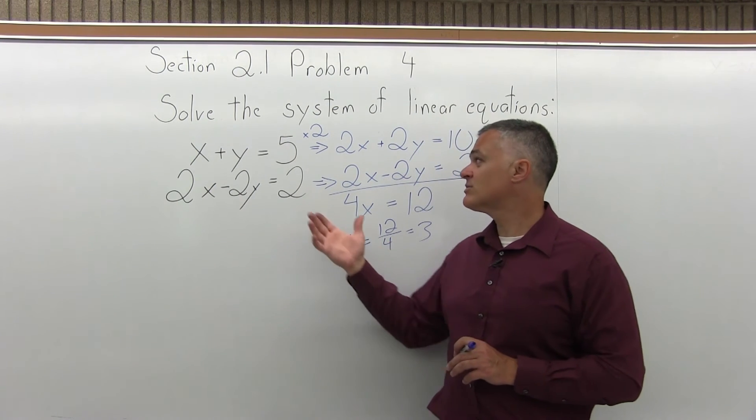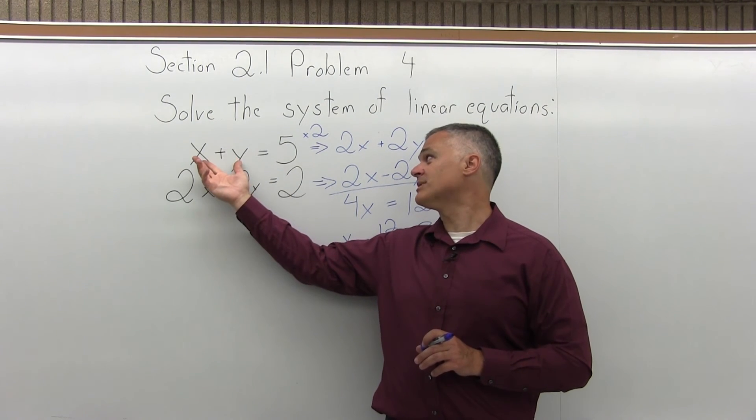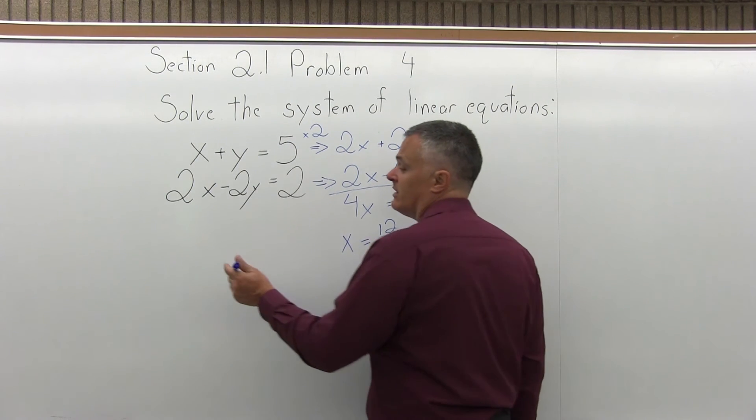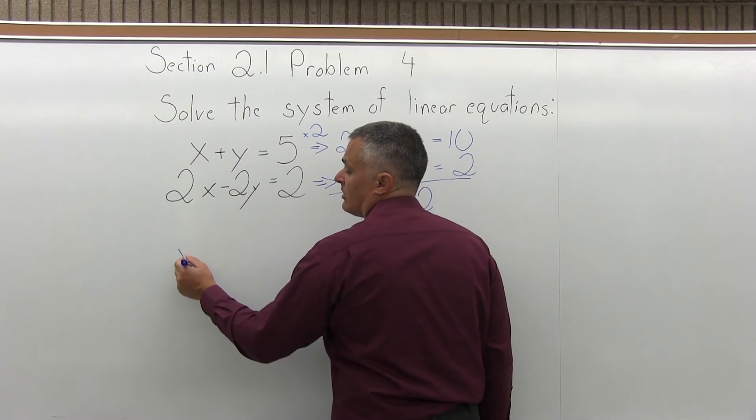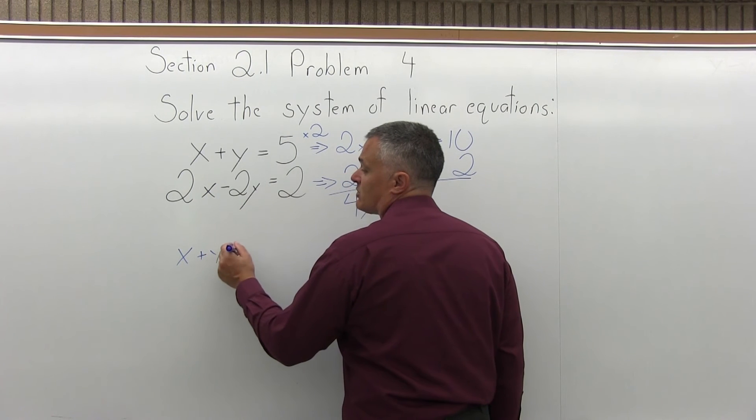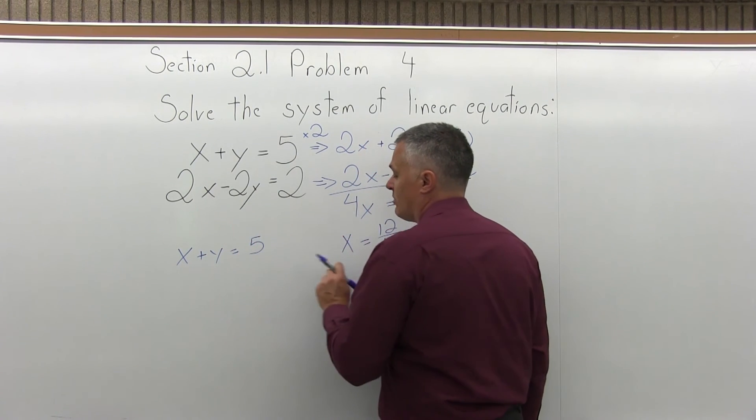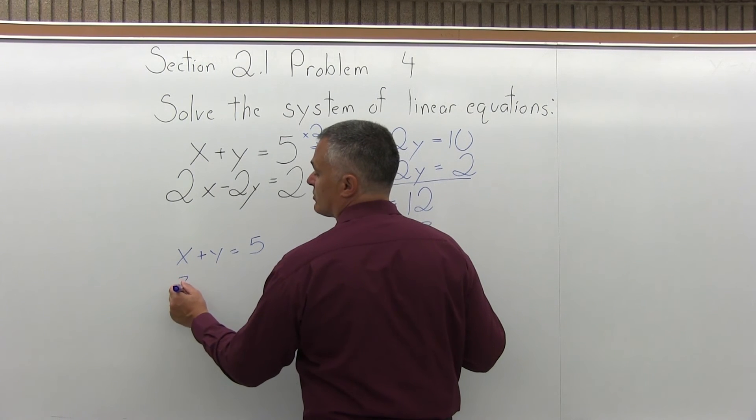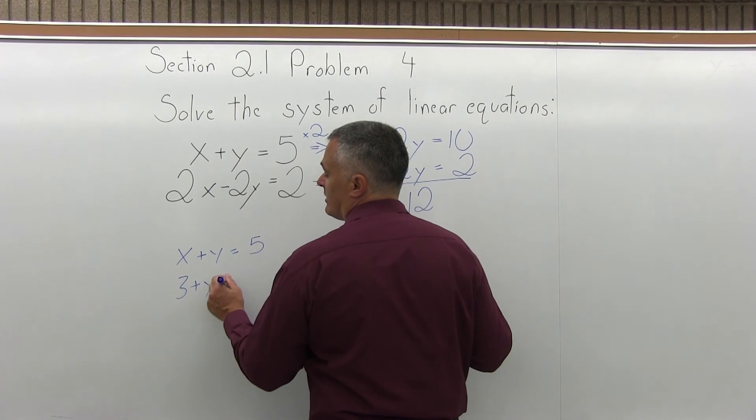If I know x is 3, I can see that 3 plus something equals 5. I can see without doing the work that y must be 2. But to do it, take your original equation of x plus y equals 5, put in the value from step three, which is x equals 3. So this becomes 3 plus y equals 5.